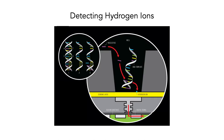The way Ion Torrent sequencing works is by detecting hydrogen ions. If you recall your chemistry, pH — changing things from acid to basic — is really all about the availability of hydrogen ions. You've got one of these wells with a pH sensor underneath it that connects to a silicon computer chip. The DNA molecule sits in the well; the nucleotides come in; as a nucleotide gets incorporated, it releases a hydrogen ion. This miniature pH meter recognizes that hydrogen ion and gives a signal to the computer chip.